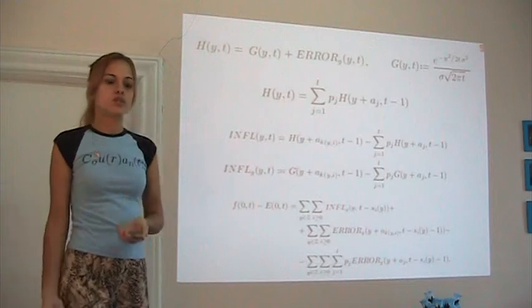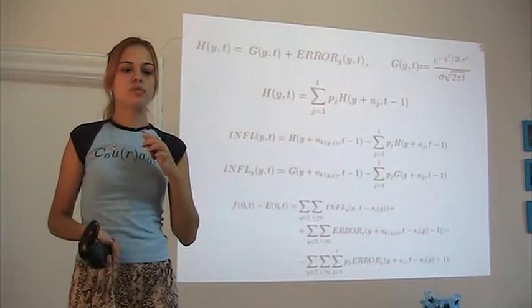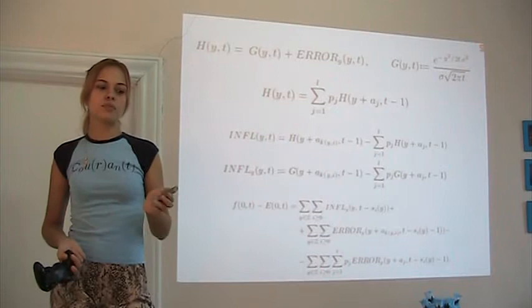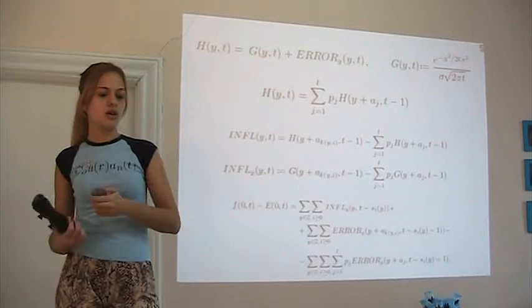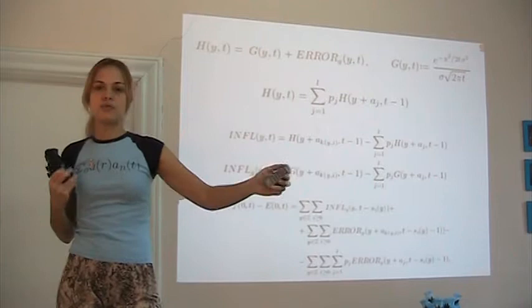So this function h, which is the probability that a chip in position y gets to the origin in time t, this function is very important for the problem, but it's also very hard to write down an exact formula for, because you have all the different kinds of steps, and there could be many different ways that you can get to the same place.